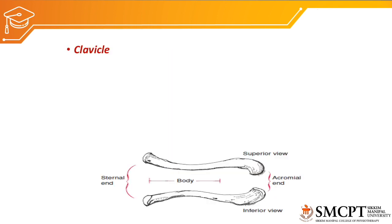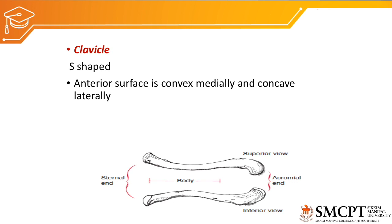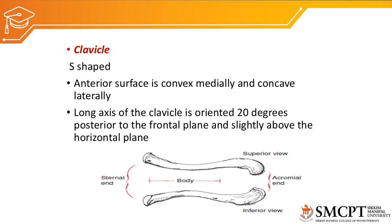The first bone is the clavicle that forms the shoulder complex. It is an S-shaped bone and the anterior surface is convex medially and concave laterally. The long axis of the clavicle is oriented 20 degrees posterior to the frontal plane and slightly above the horizontal plane, so anatomically it is in a slightly elevated position.